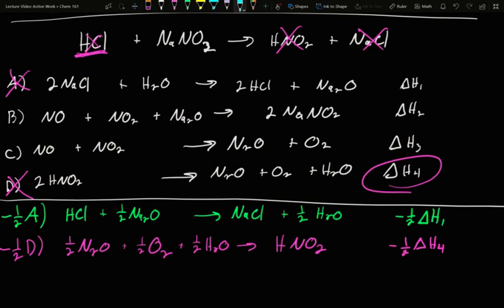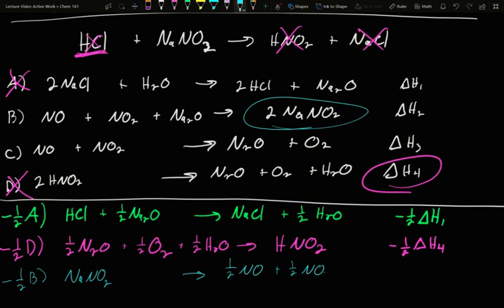Where do we find sodium nitrite? There's only one source of sodium nitrite. It's from equation B. I want the same as before. I have too much and it's on the wrong side, so I need to make the same changes. Minus one half B will flip it around and give us a single NaNO2 over on the left. It's going to give us half NO on the right, half NO2 on the right, and half Na2O over on the right. Similarly, it would be minus one half delta H2.